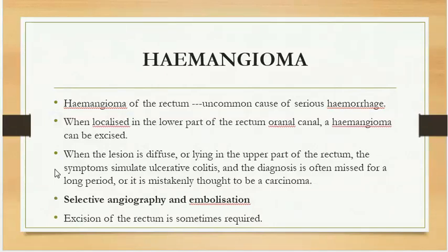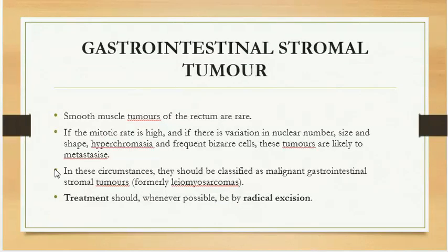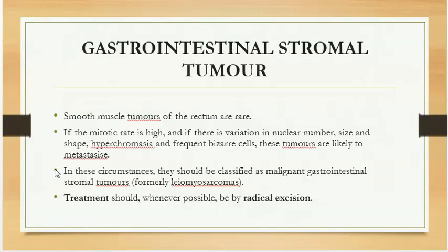Gastrointestinal stromal tumours (GIST) are smooth muscle tumours of the rectum which are rare. If the mitotic rate is high on histological examination, and if there is variation in nuclear membrane size and shape, hyperchromasia and frequent bizarre cells, these tumours are likely to metastasise. Treatment should whenever possible be by radical excision.